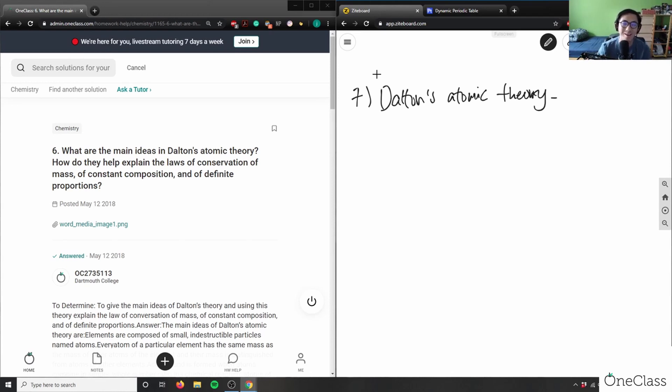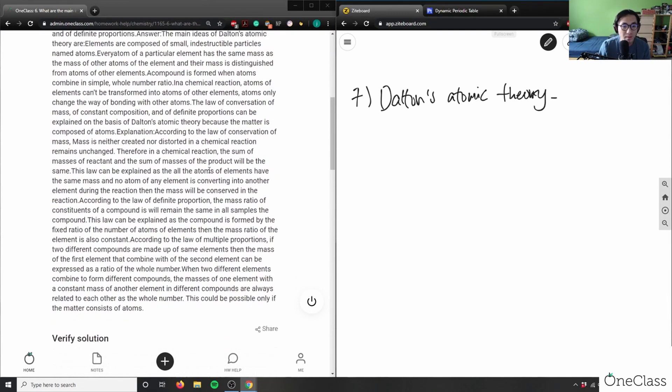In terms of explaining Dalton's atomic theory and then talking about law of conservation of mass, constant composition, and definite proportions. For the sake of time, I'm just going to double check that they explain the concepts correctly.